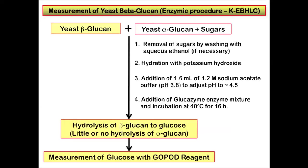Then 40 microliters of glucosyme enzyme mixture is added and the reactions are incubated at 40 degrees Celsius for 16 hours or overnight. During this process, the beta-glucan is hydrolyzed to glucose and there is little or no hydrolysis of alpha-glucan. The glucose released is then measured using GOPOD reagent.